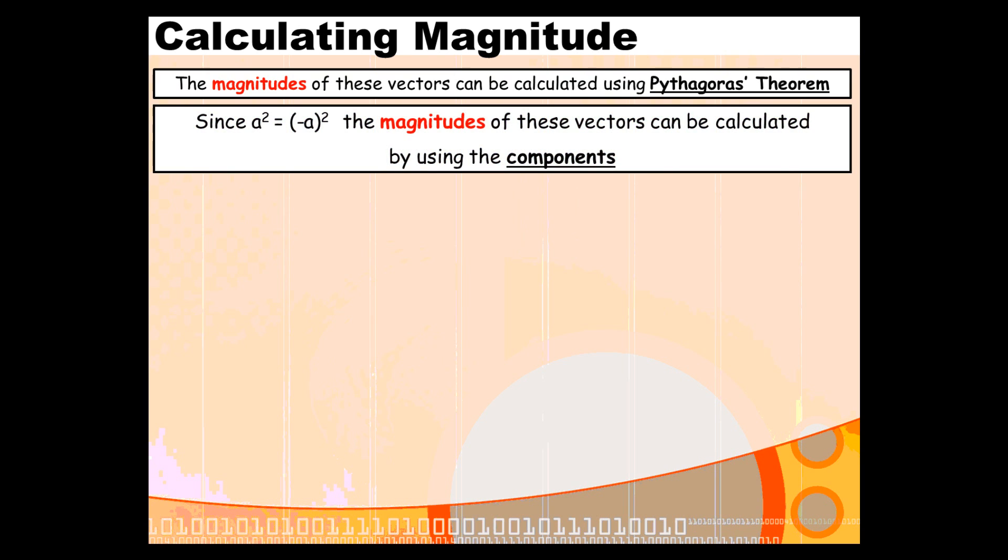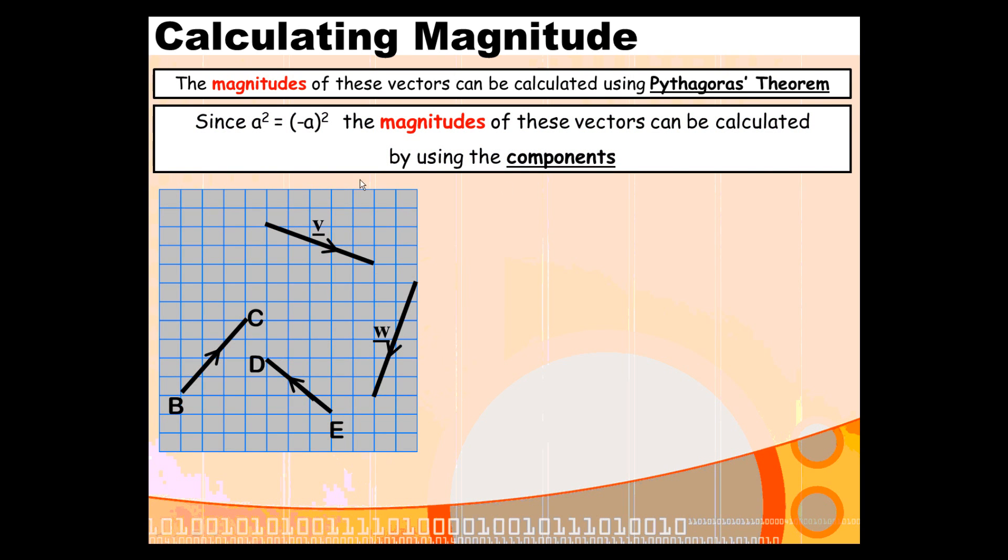To find magnitude, we just use Pythagoras. Because negative a squared is the same as a squared, we can just use the components, square them, add them up together, and square root the whole thing to find the size of our vector.